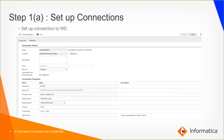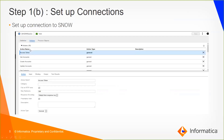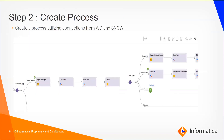In our use case where we are demonstrating bi-directional integration between Workday and ServiceNow, the first step would be to create a connection to Workday using the out-of-the-box connection. You can see that I have set up a connection to Workday HR module. The second step is setting up a connection to ServiceNow using its REST API, and then finally we would set up a process utilizing those connections.